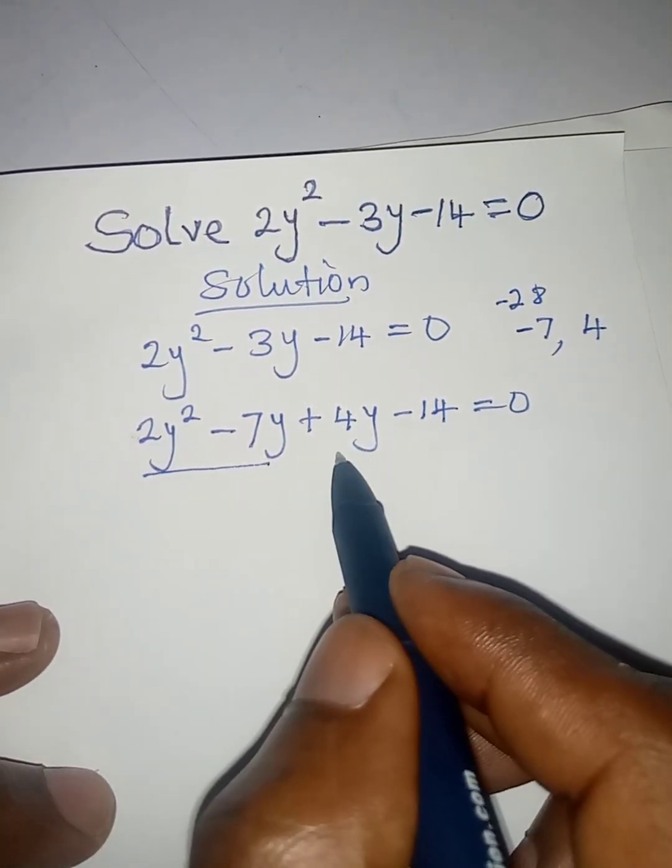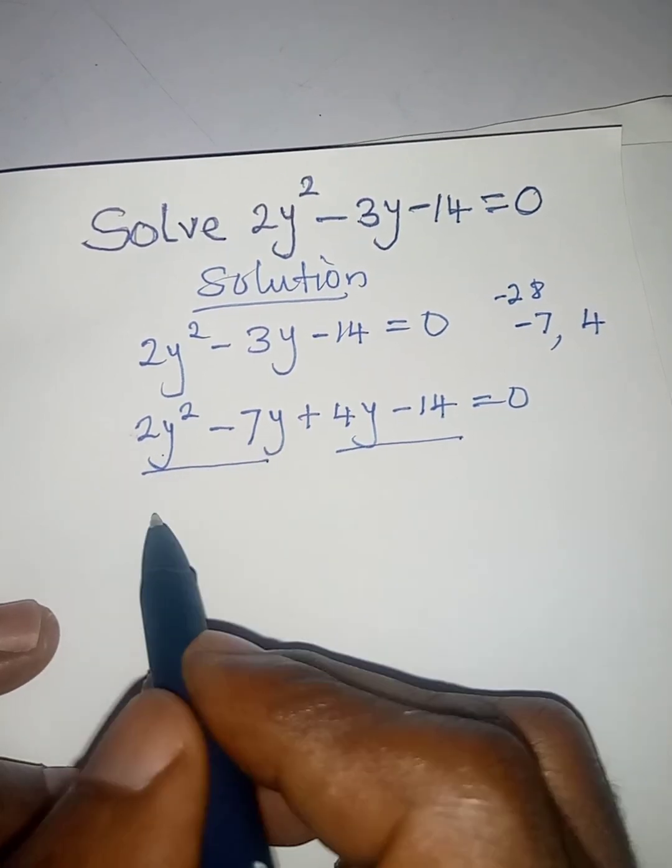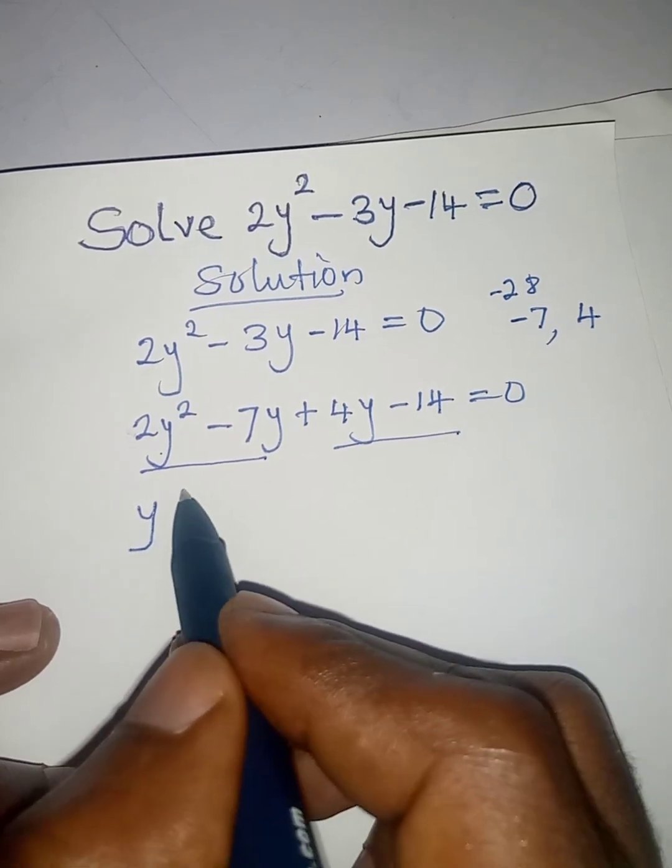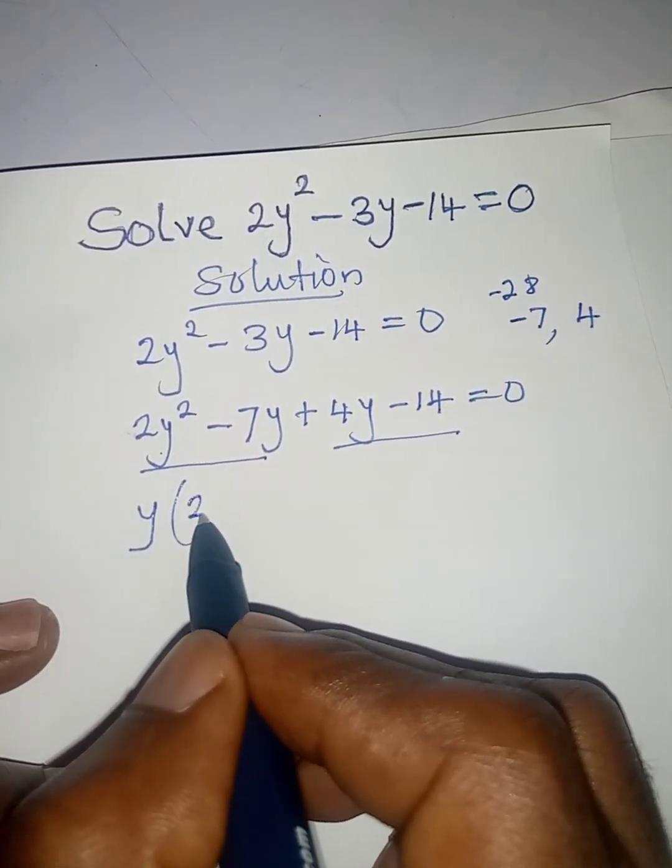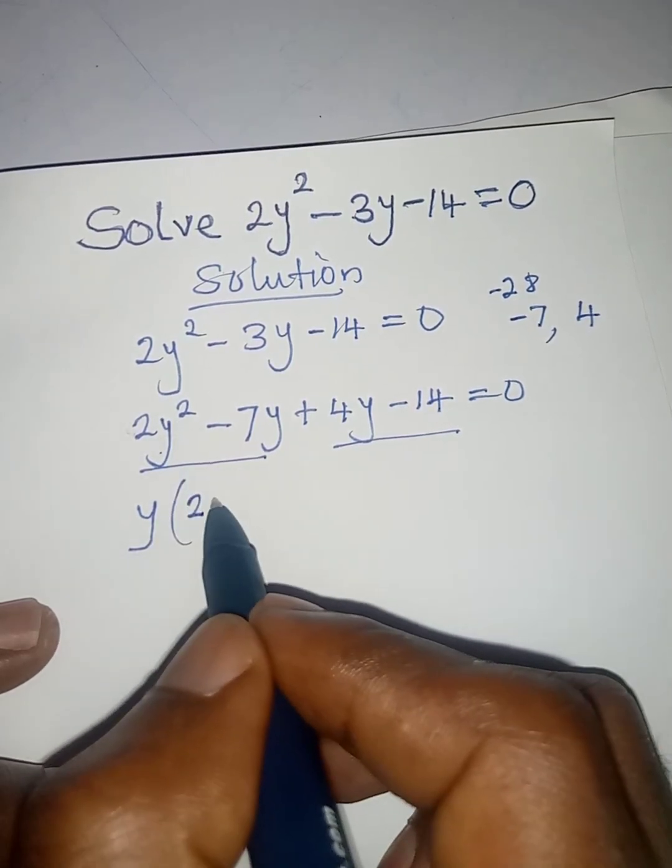What is common to this and this? It is y, so I'll pick out y, then I will open brackets. Two will still be left over, and then y² over y will give us y. Minus 7y divided by y will give us just 7. I'll close this bracket.